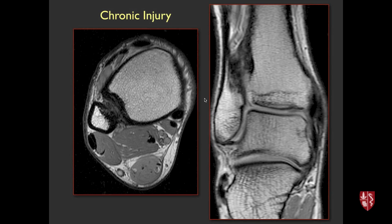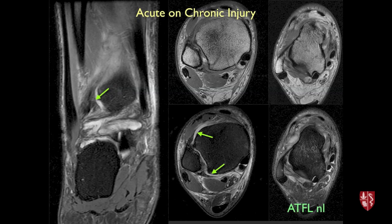Another thing we see fairly often, especially in football athletes, is chronic injury. You can appreciate how much low signal tissue there is between the tibia and fibula, several centimeters above the ankle joint. People get a lot of scar tissue and bone forming in the interosseous membrane region from a previous syndesmosis or high ankle sprain. We may also see acute-on-chronic injuries — thickening of ligaments or interosseous membrane, with a new acute injury on top. On this fat-suppressed T2 image, the ligament looks stripped off the tibia and has been re-injured, partly avulsed off the tibia.